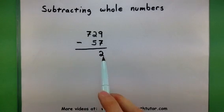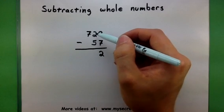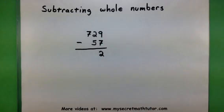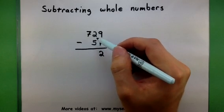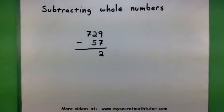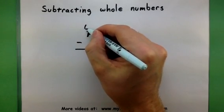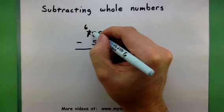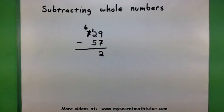Alright, once I'm finished, I move on to the next place value and do the same process. 2 minus 5. Hmm, that's a problem. Every once in a while when I go to subtract, the top number may actually be smaller. It's okay, we're not out of luck. We're going to go ahead to the 7 and borrow one of its numbers.